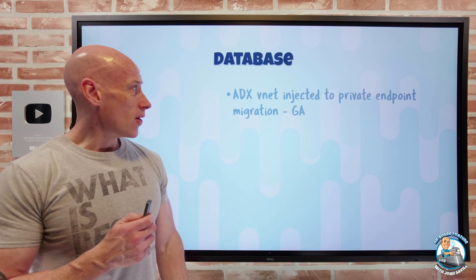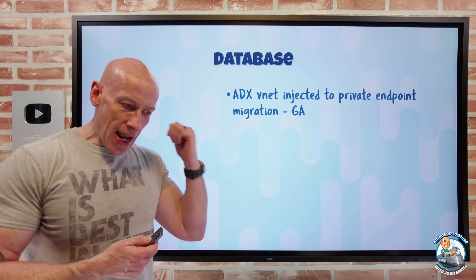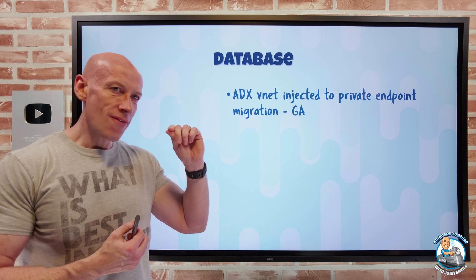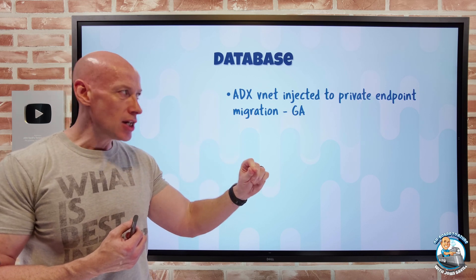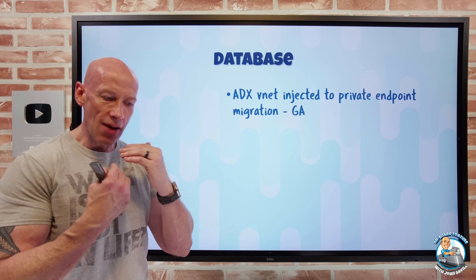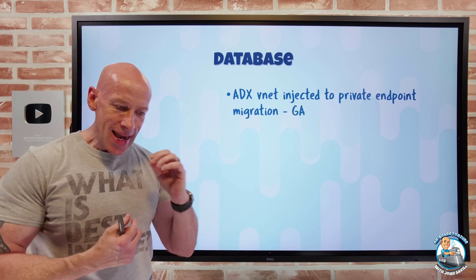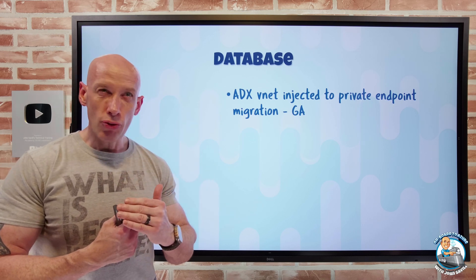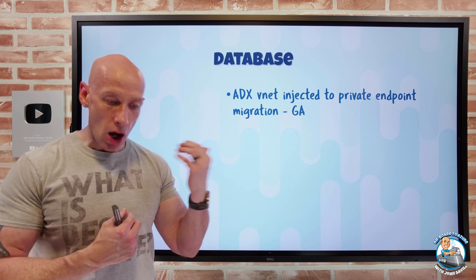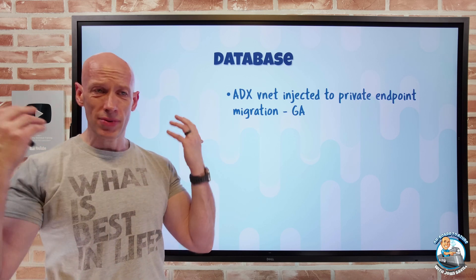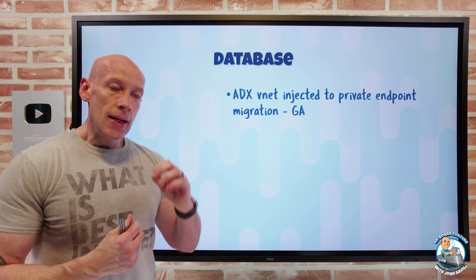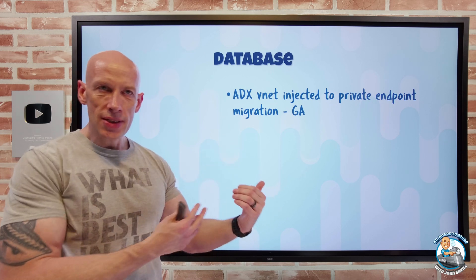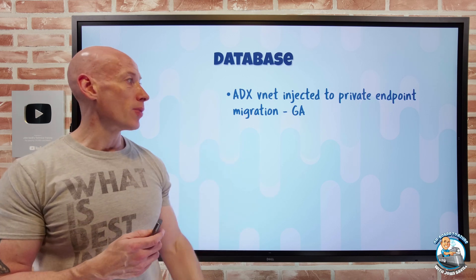On the database side, Azure Data Explorer now allows you to switch from a VNet-injected configuration to a private endpoint. The migration process involves minimal downtime and is straightforward — you can do it through the Azure portal, an ARM template, CLI, and so on. So if you no longer want to inject into a subnet and prefer a private endpoint, you can perform that migration.